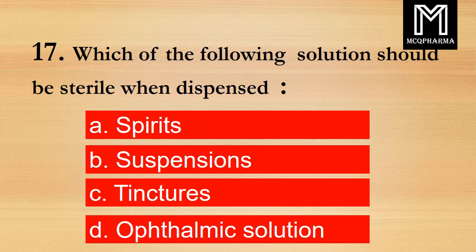Question number 17. Which of the following solution should be sterile when dispensed? Option A: Spirits. B: Suspensions. C: Tinctures. D: Ophthalmic solution. Correct answer: Option D, Ophthalmic solution.